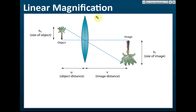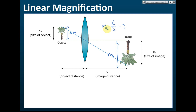Linear magnification — for example, if the object is two meters and the image is six meters, then linear magnification m equals six divided by two, which equals three. So linear magnification is the quantity that tells how much the image is bigger or smaller than the object. Six meters is three times bigger than two meters, so the linear magnification is three.